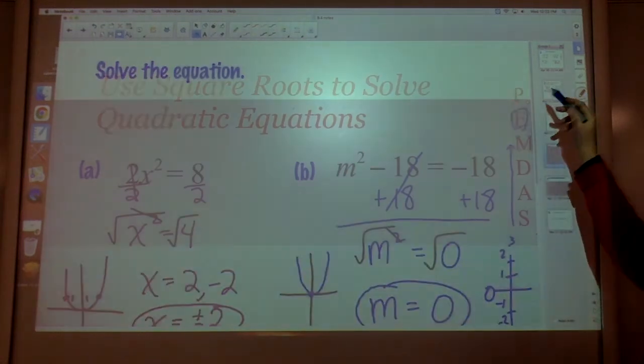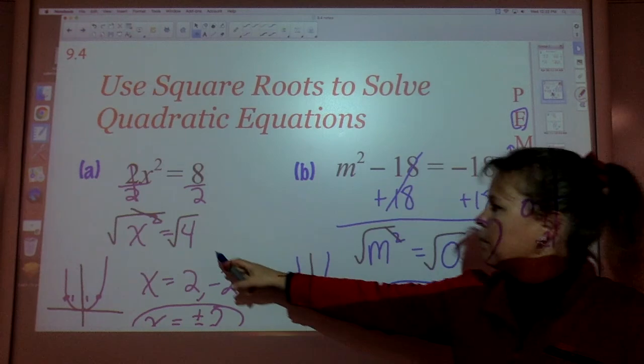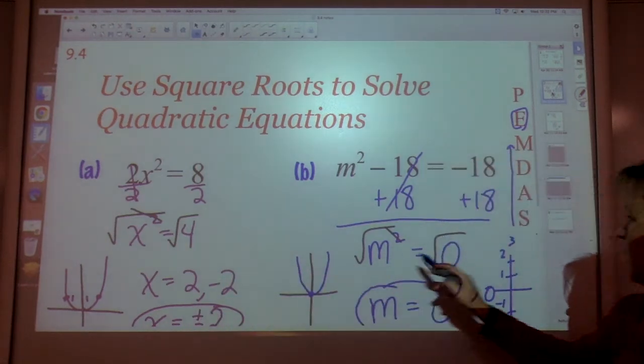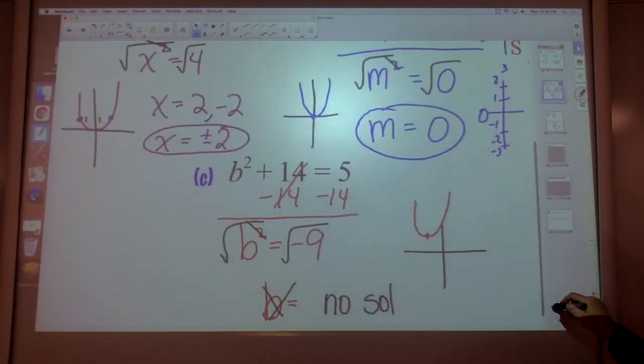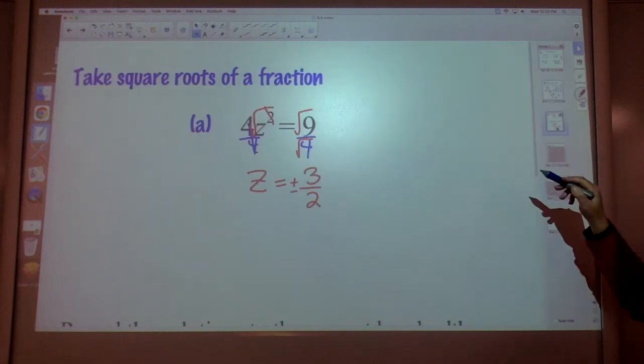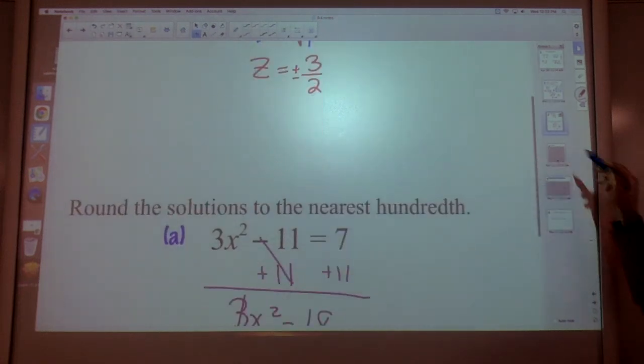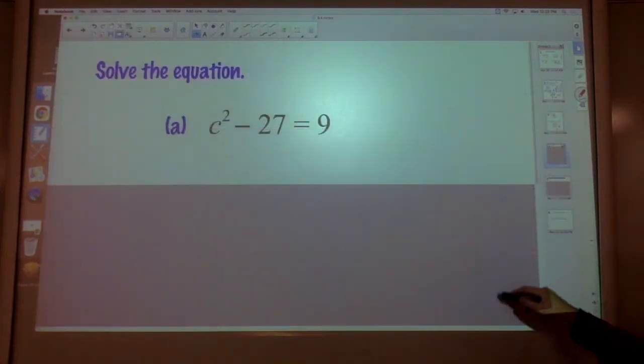All right. So you've seen one of each example. What if it's a positive whole number? You have a plus and a minus. What if it's zero? What if it's no solution? What if it's a fraction? And what if it's a decimal? Let's try them all on our own.